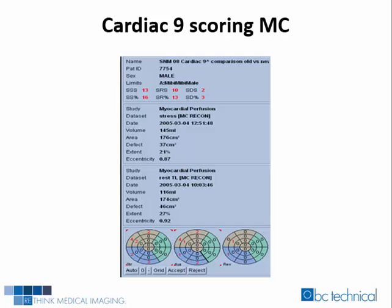Here is Cardiac IX's motion corrected study quantitative scoring results. The summed stress score equaled 13, the summed rest score equaled 10, and the summed difference score was 2.